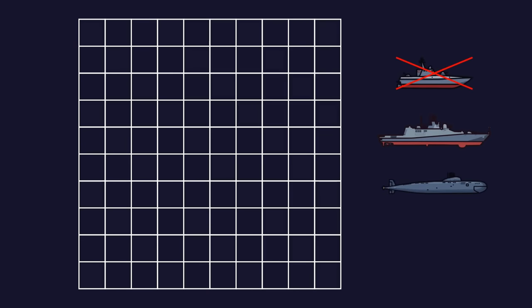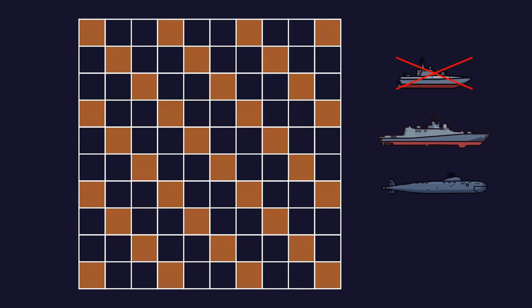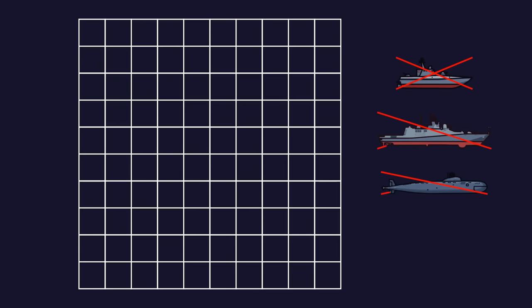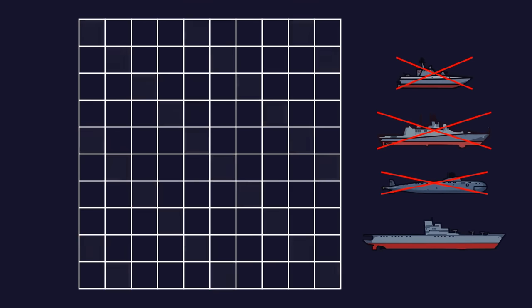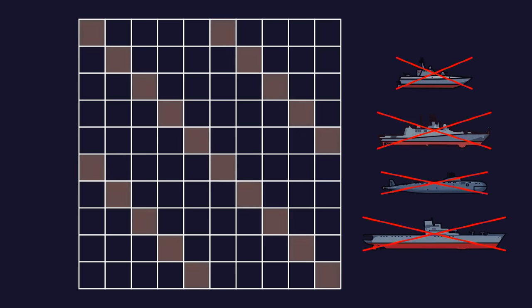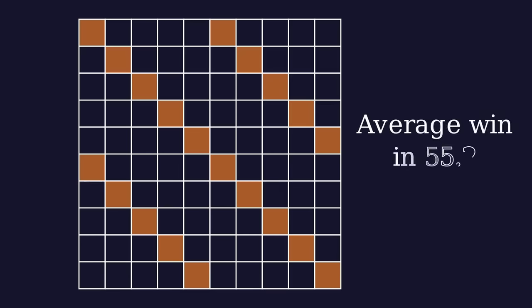If you sink the destroyer, the next smallest ship is 3 squares long. So then you only need to shoot every 3 squares. And once you've sunk all the ships that are 2 or 3 squares long, you can shoot every 4 squares. And if you know that your opponent only has a carrier left, you can shoot every 5 squares. By using this strategy, you'll on average sink all your opponent's ships in around 55 shots.